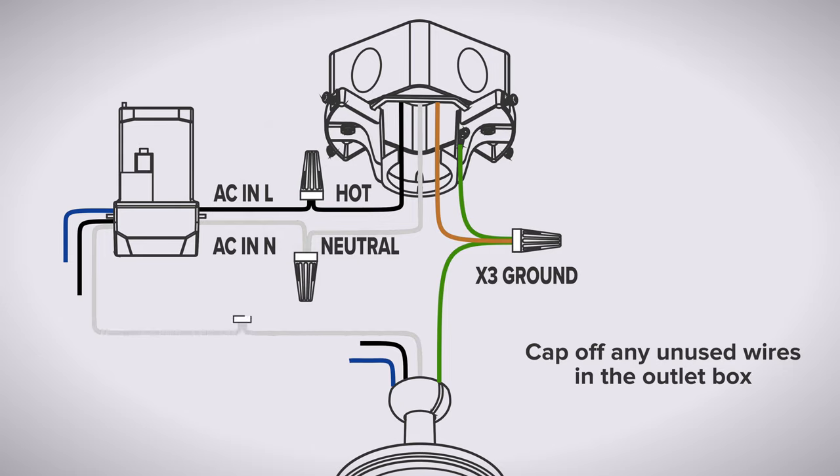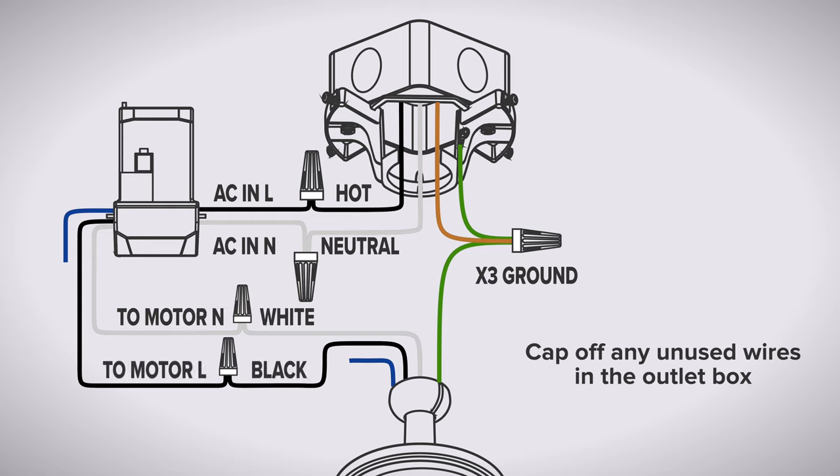Connect the white wire from the fan to the white wire from the receiver labeled 2MotorN. Connect the black wire from the fan to the black wire from the receiver labeled 2MotorL. Connect the blue wire from the fan to the blue wire from the receiver labeled 4L.